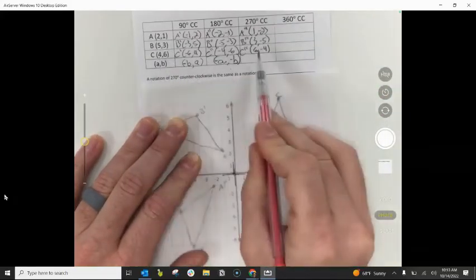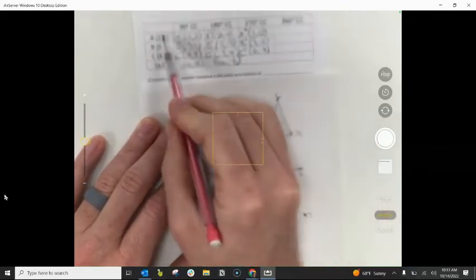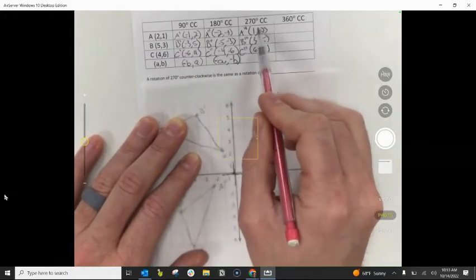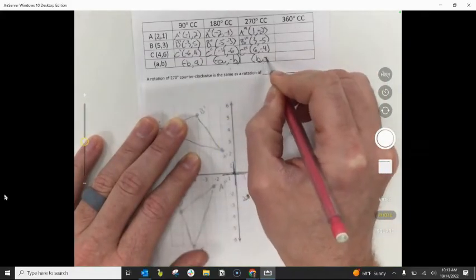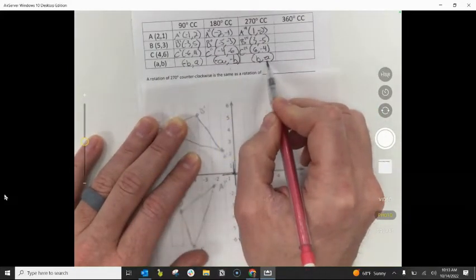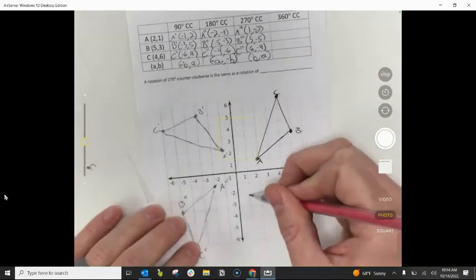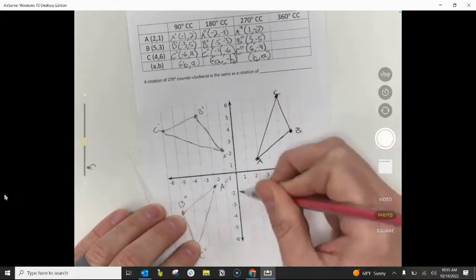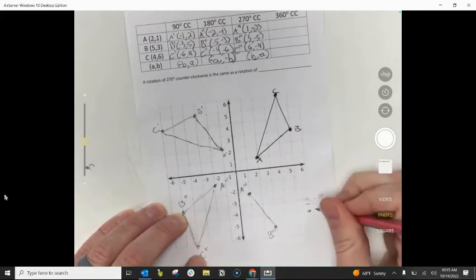And we want to generalize once again from our original points to our image points, from our pre-image to our image. And it looks like we're changing the position, we're flip-flopping A and B, but now we're changing the sign of the second number. So it looks like we're going (B,-A). (5,3), we flip it to (3,5), and then we change the sign of the second number. And so then if I plot these points, I'll put my A triple prime (1,-2), B triple prime (3,-5), and (6,-4). So A triple prime, B triple prime, C triple prime.